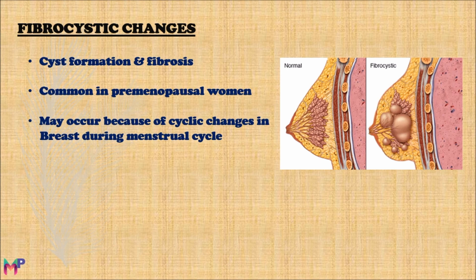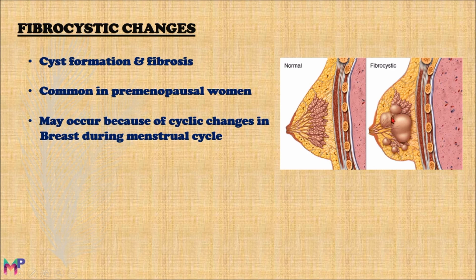In this picture, you can clearly see the normal breast with the lobule and terminal duct combining to form the main duct. In the abnormal breast showing fibrocystic changes, you can see six cysts developed in the lobule or terminal duct. The lobule and terminal duct are the major sites for fibrocystic changes development.